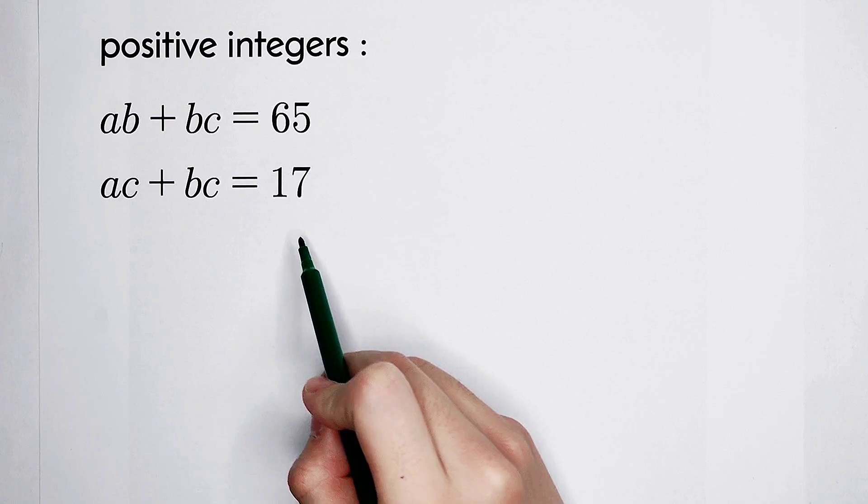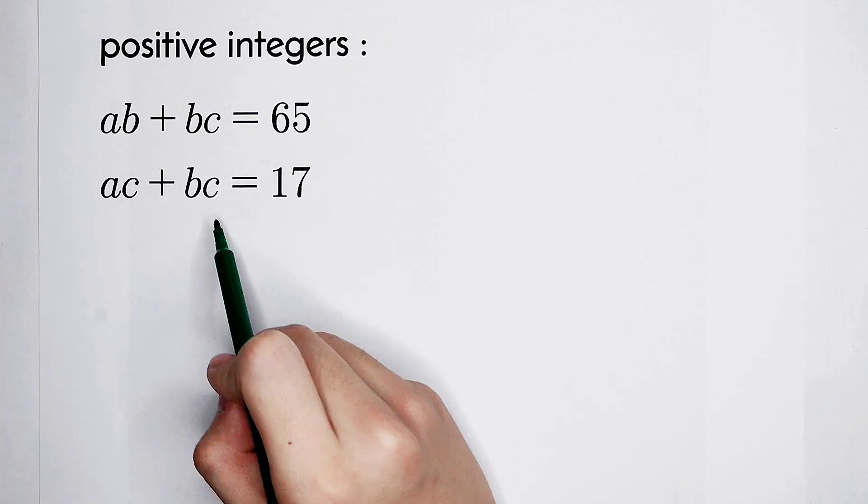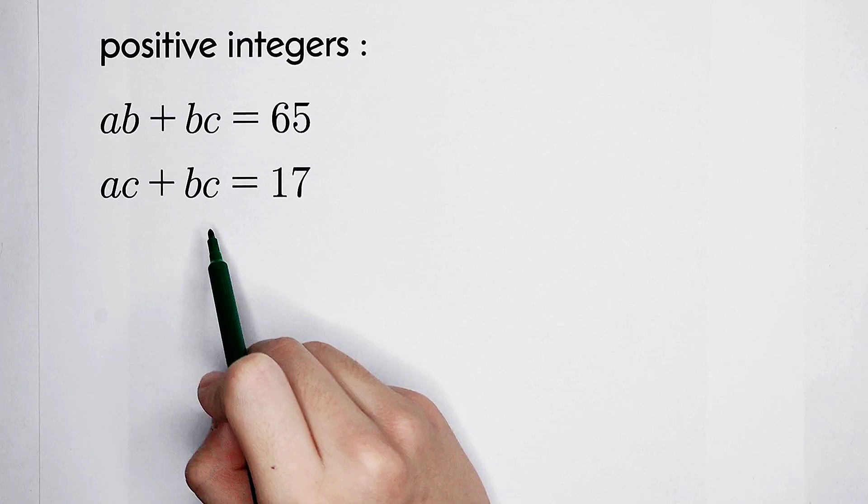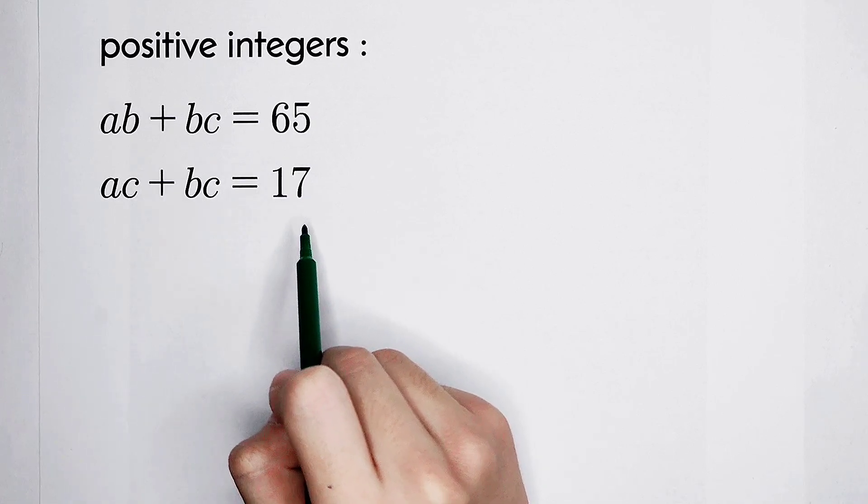In the second equation, we can do the same thing to the left-hand side. We can take out c. That is, c times bracket a plus b.